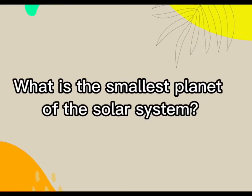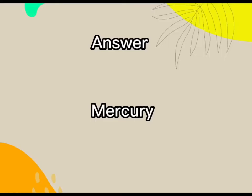What is the smallest planet of the solar system? Answer: Mercury.